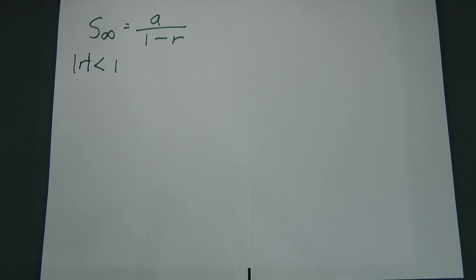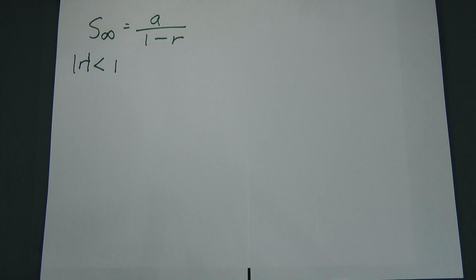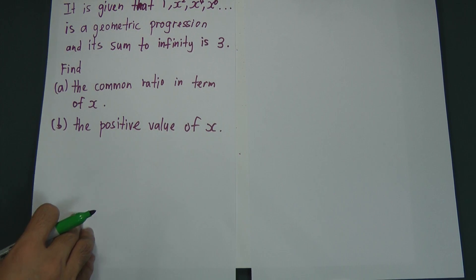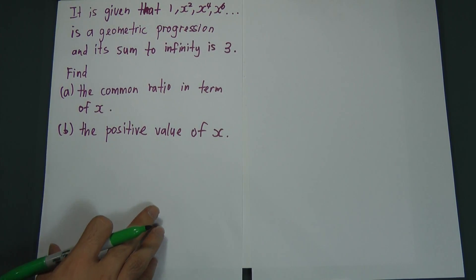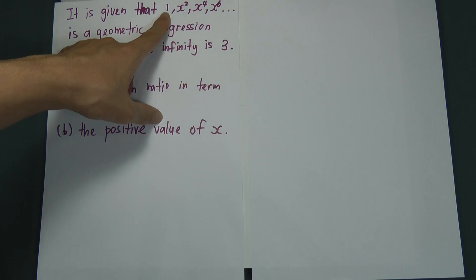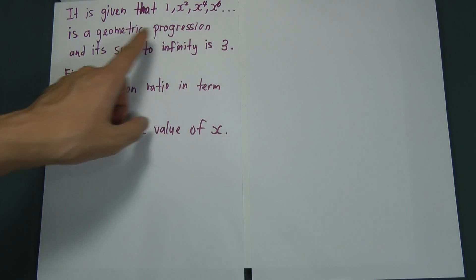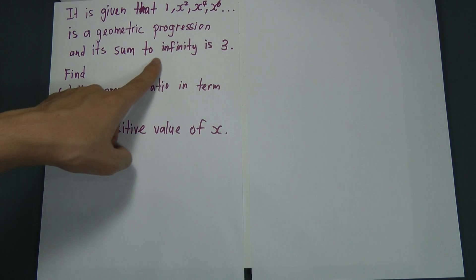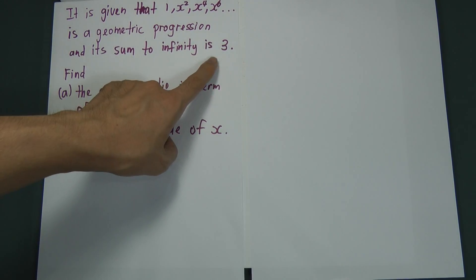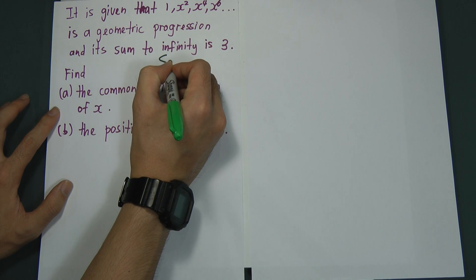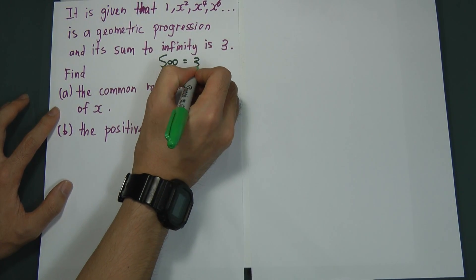Let's look at one example. It is given that 1, x², x⁴, x⁶, dot dot dot is a geometric progression and its sum to infinity is 3. That means sum of infinity is equal to 3.